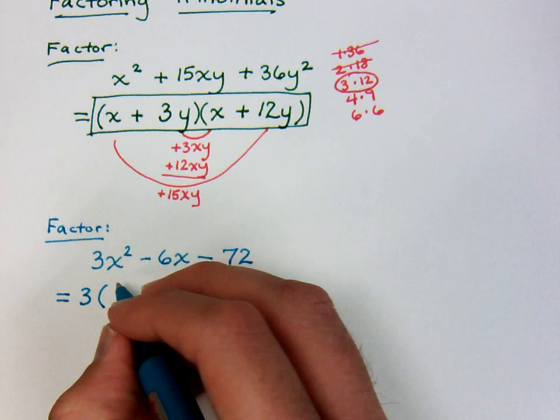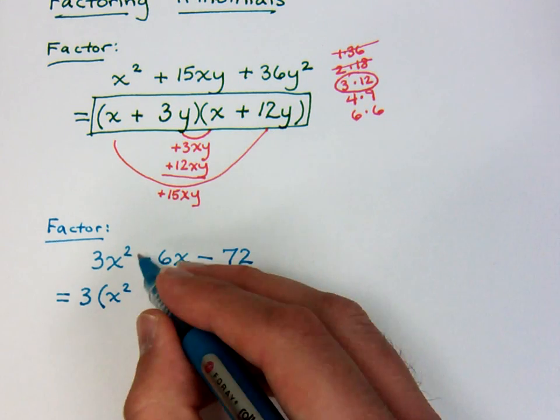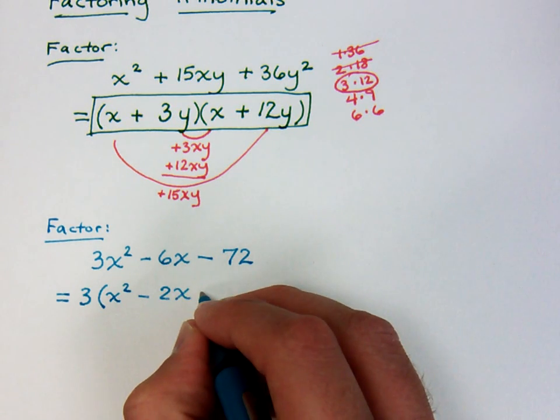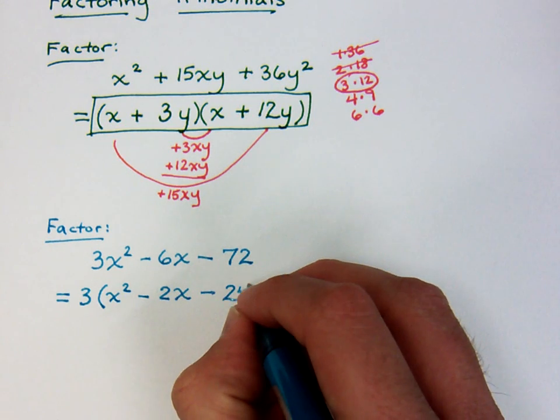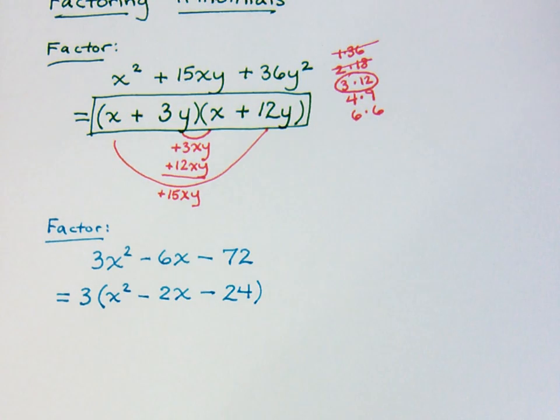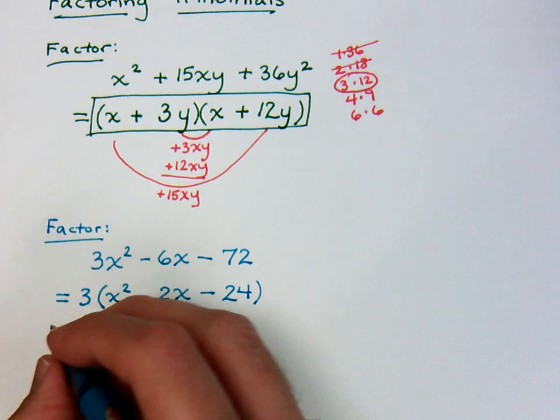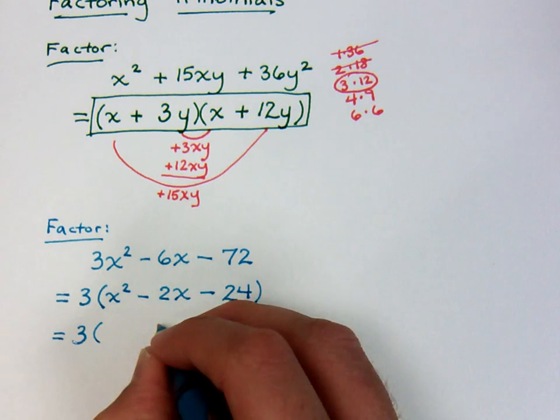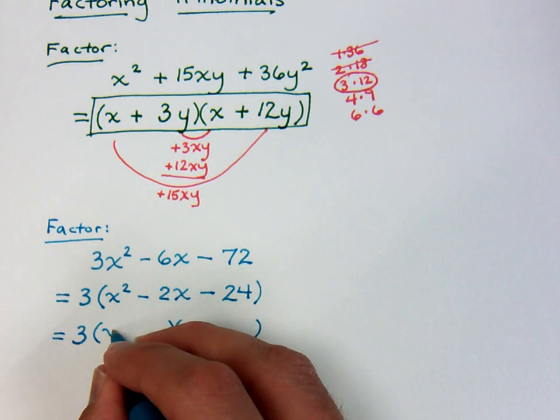So that tells me that I can factor out a 3 from this. Now, if I factor out the 3 from the 3x squared, I get x squared, the negative 6 taking away that factor of 3 gives me a minus 2x, 72 divided by the 3 is 24. So we have a common factor. Now we need to factor this trinomial. So the 3 is still part of the factorization, and I'm going to take this trinomial and break it down.